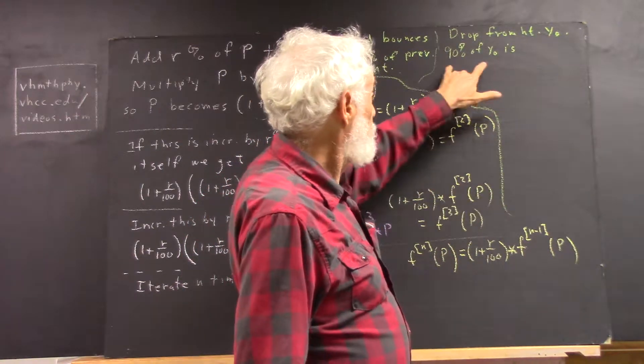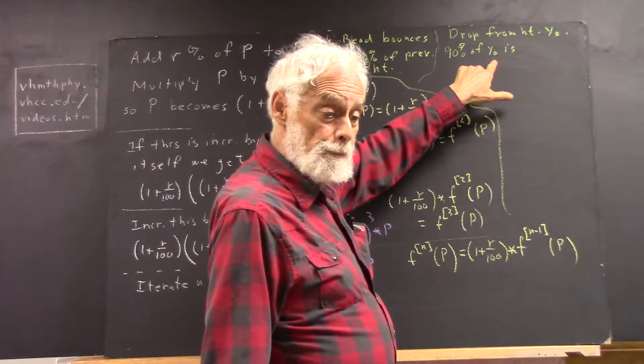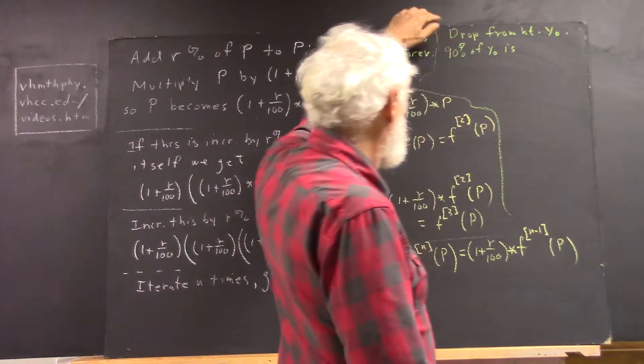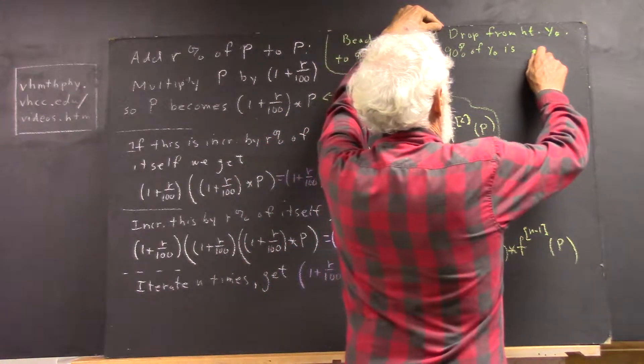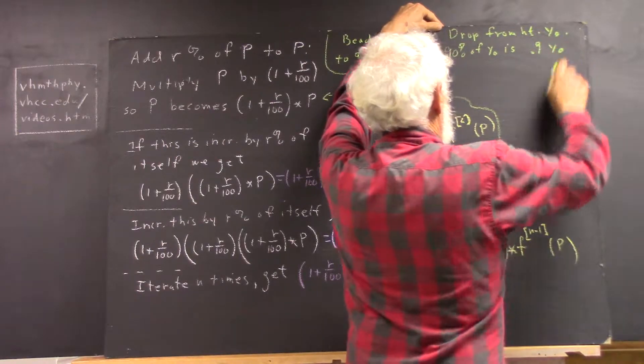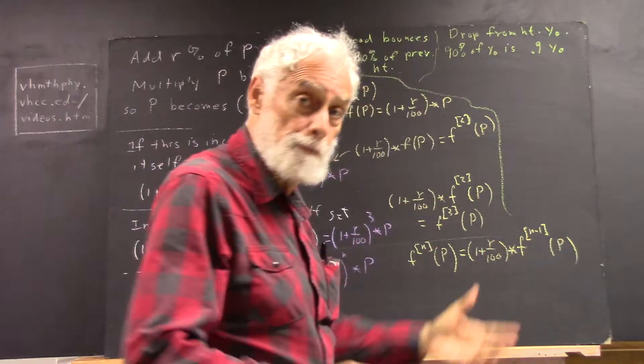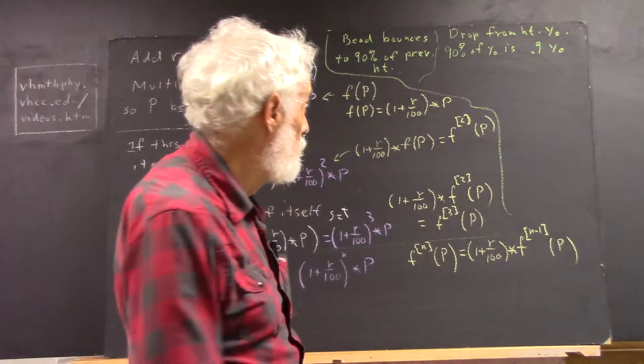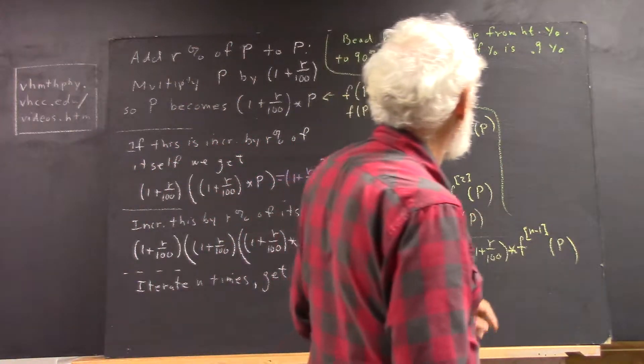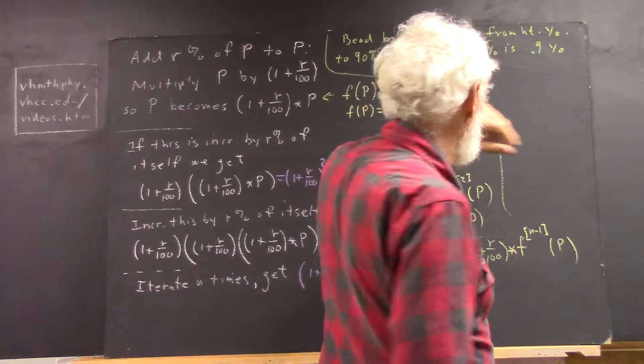So how far did it bounce? Well, how high did it go? It went to 0.9 why not. Because of course 90% is 90 per 100, 0.9. Okay, so that's how high it is on the first bounce.